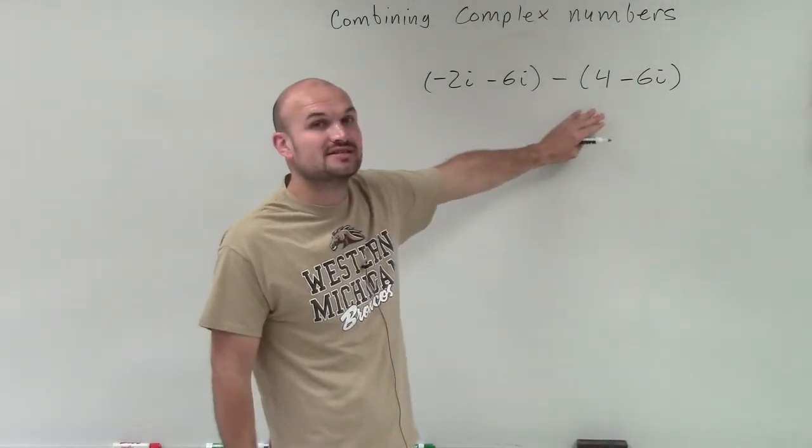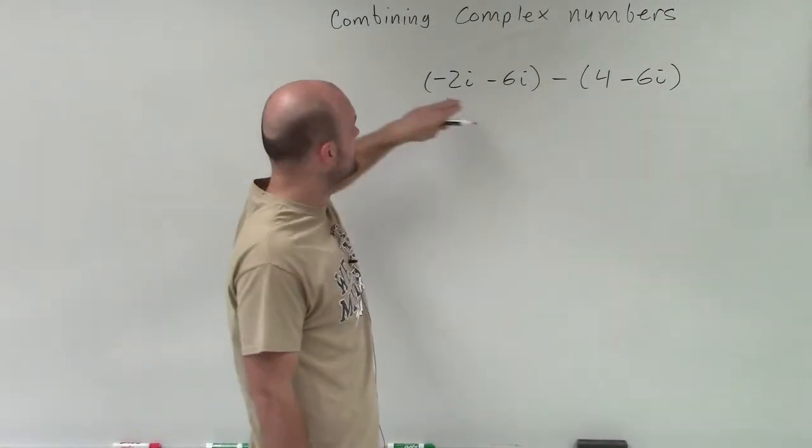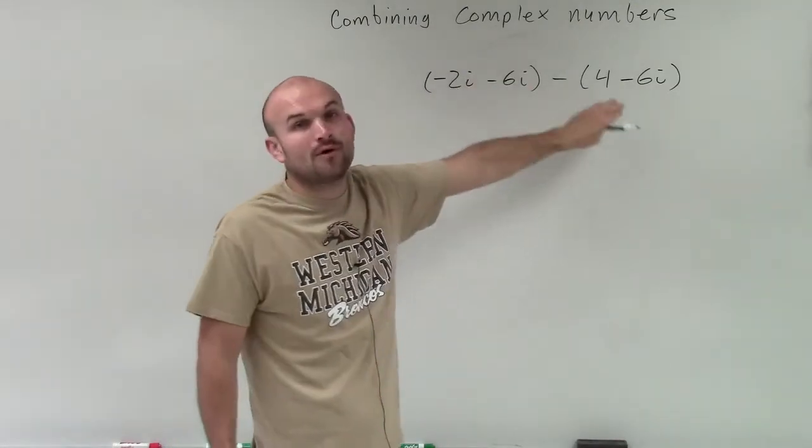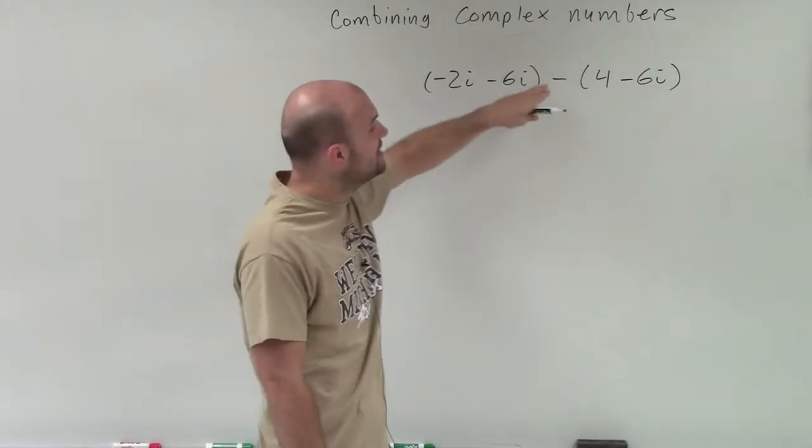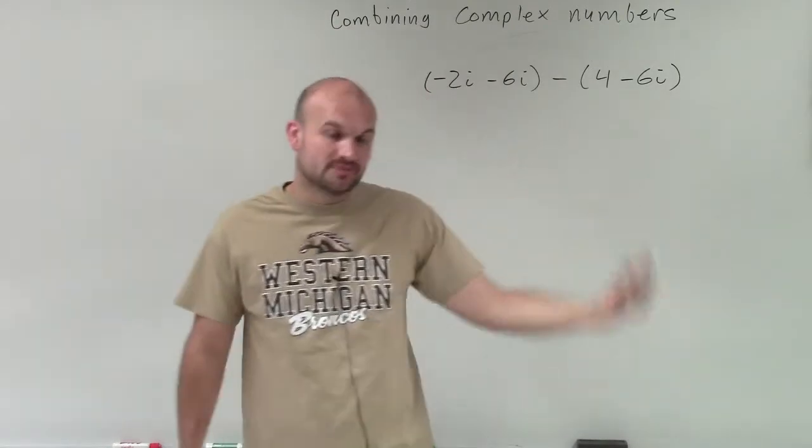So what I notice is make sure that you can see that I have these parentheses here. So I have negative 2 minus 6i minus 4 minus 6i. So this subtraction sign is subtracting this whole number. So there's a couple different ways we can do this.